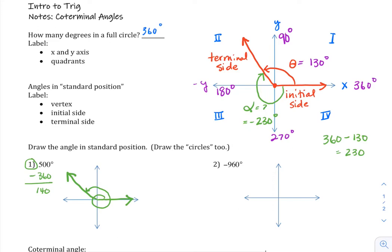If I wanted to draw an angle for negative 960, that's going to be going in the clockwise direction, starting with the initial side. But how many times around do I have to go? So what I'm going to do is I'm going to add 360 every time I go one full rotation.